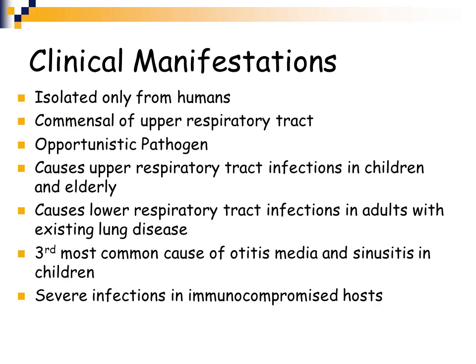Moraxella catarrhalis can be isolated only from humans; it has not been isolated from other animals. It is a commensal of the upper respiratory tract and usually causes opportunistic infections, commonly upper respiratory tract infections in both children and the elderly — those with somewhat suppressed immune systems. It can cause lower respiratory tract infections in adults with pre-existing lung disease, such as chronic bronchitis, emphysema, or COPD.